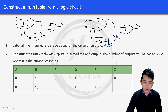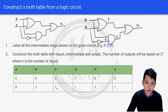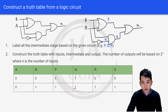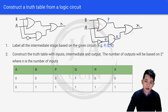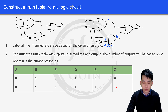The next row is A=0, B=1. A and B through an OR gate gives P=1. Q is the inverse of A, which is 1. R takes Q and B as input: 1 and 1 through an AND gate gives R=1. X takes P and R as input: 1 and 1 through an OR gate gives X=1.